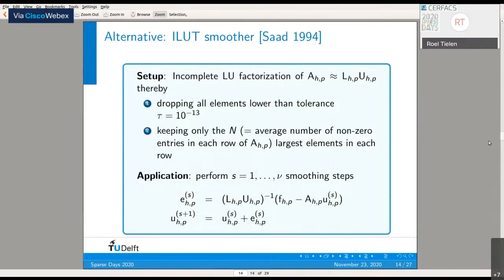Instead, we're going to use an incomplete LU factorization as a smoother, which has two thresholds. First, it drops all elements lower than a certain tolerance. Furthermore, it only keeps the n largest elements in each row, where n is the average number of non-zero entries of the original operator. We apply the smoother as described on the slide.